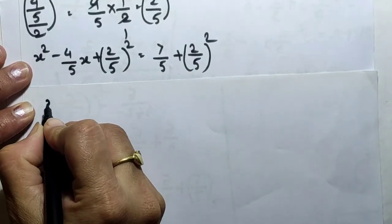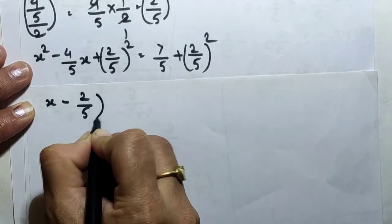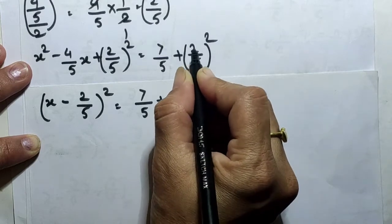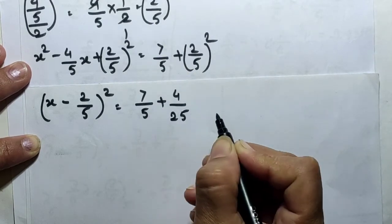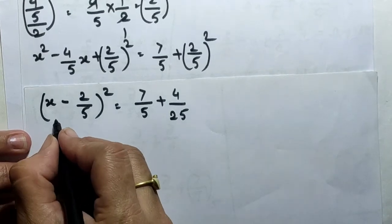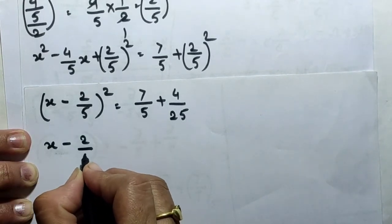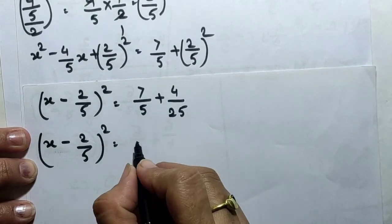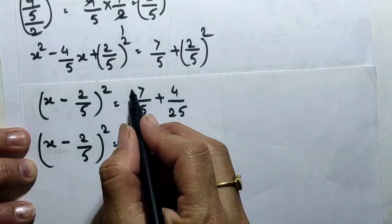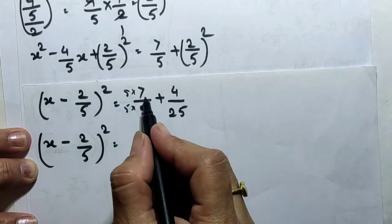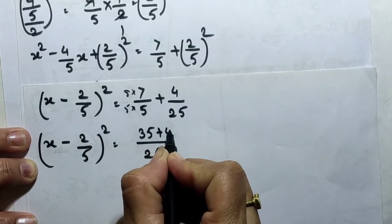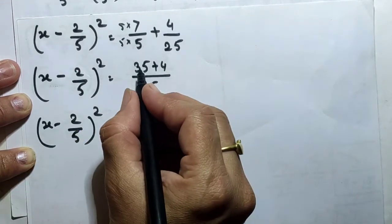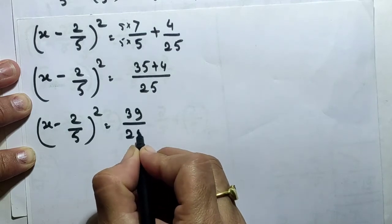The left side is the expanded form of (x − 2/5)². On the right: 7/5 + 4/25. To add these, the LCM of 5 and 25 is 25, so 7/5 = 35/25. Therefore 35/25 + 4/25 = 39/25. So (x − 2/5)² = 39/25.